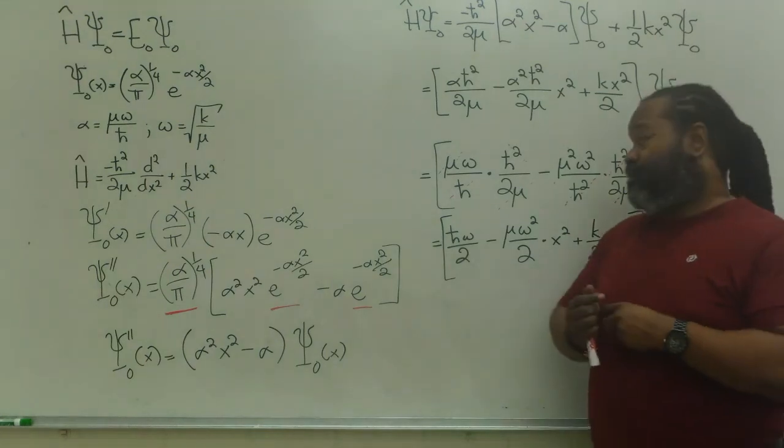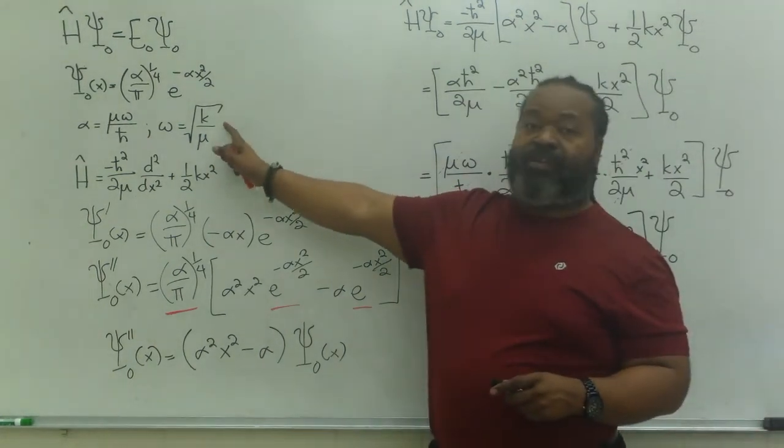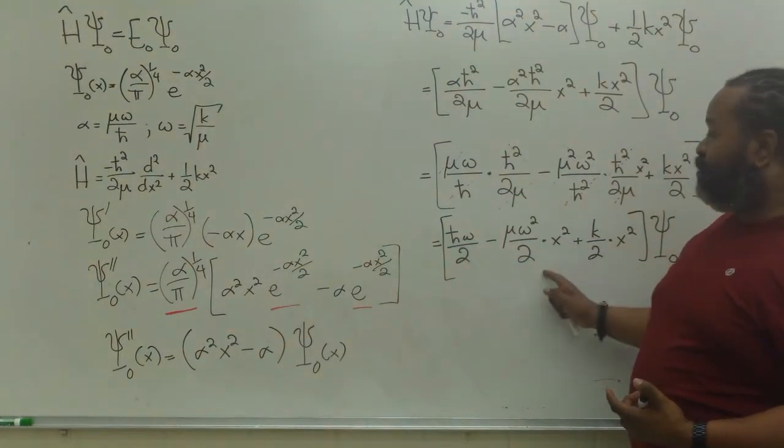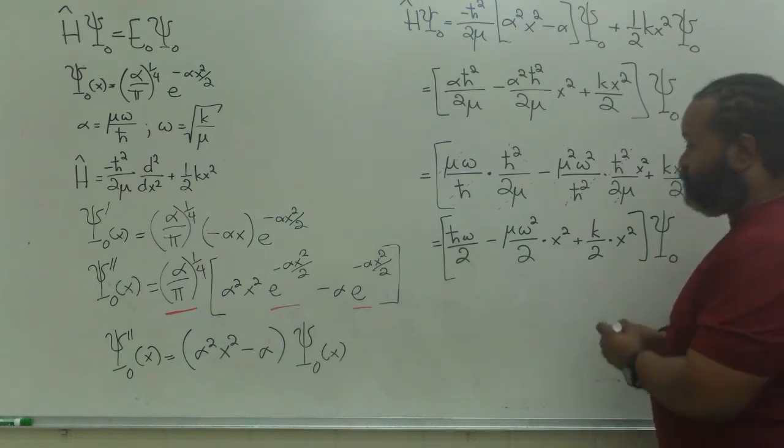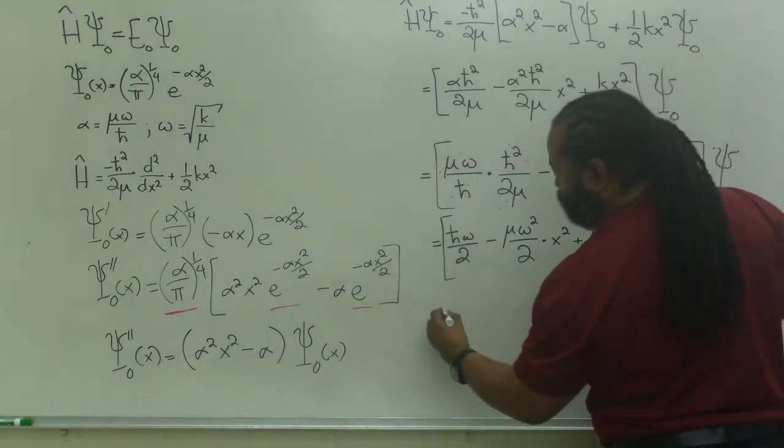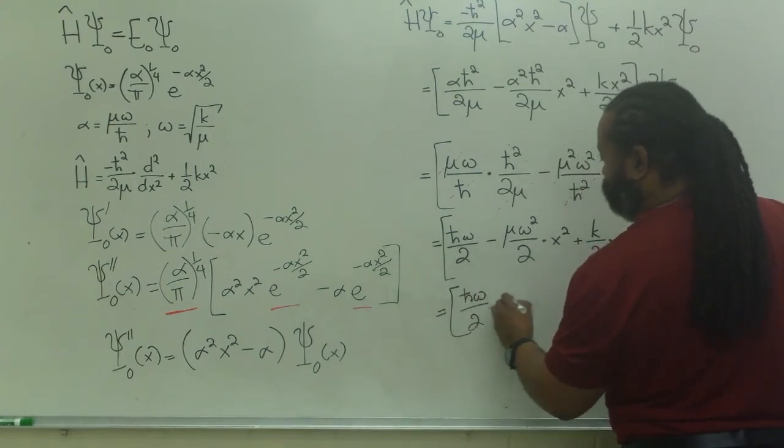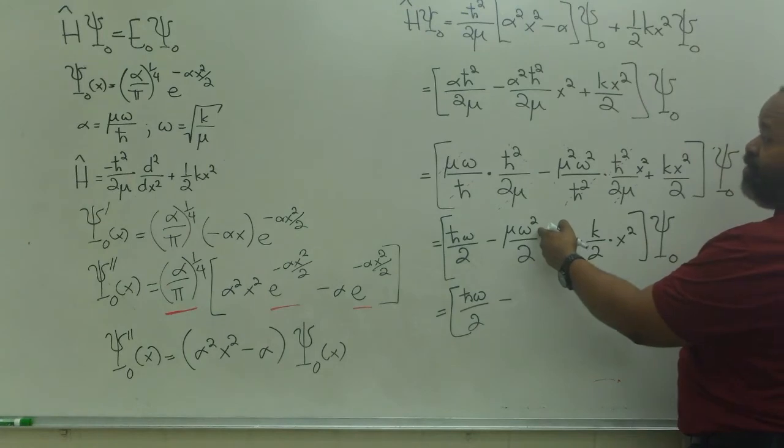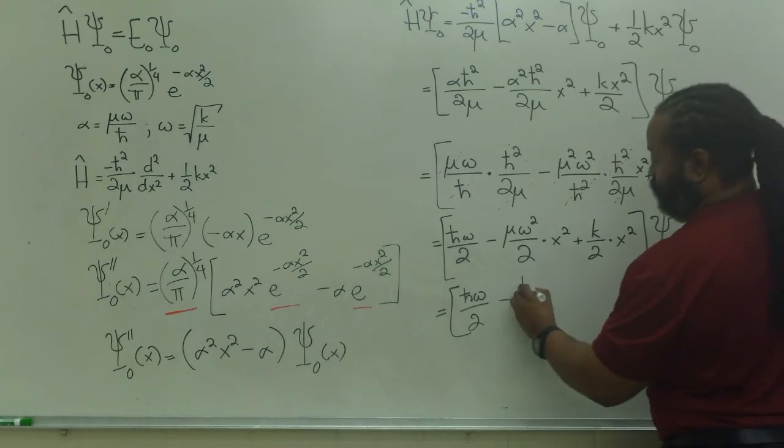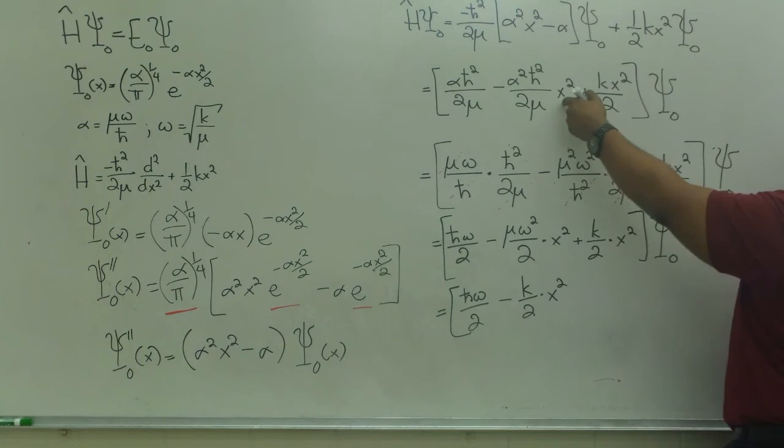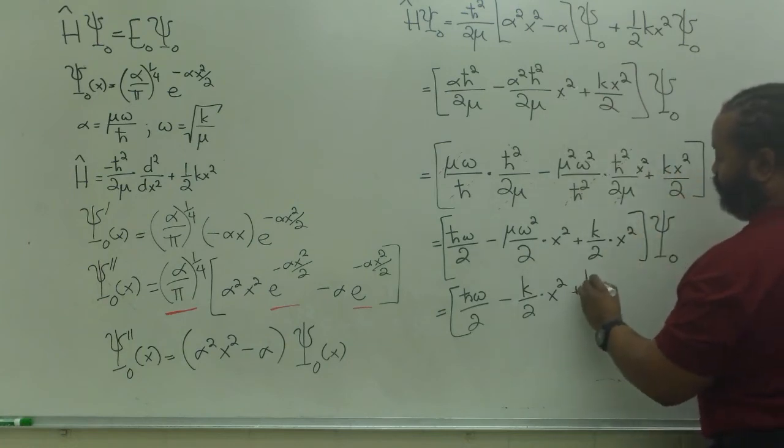So, now, I just need to do one more substitution. Omega is square root of k over mu. So, when I square it, I'm going to get a k up top and I'm going to get mu on the bottom. These mu's will cancel. So, that leaves me with h bar omega over 2. Substituting in the omega squared gives me a k up top and a mu on the bottom. Those mu's will cancel. I'm left with k over 2 times the x squared. Pulled through. I have plus k over 2 times the x squared.